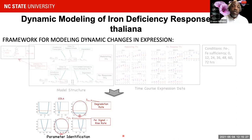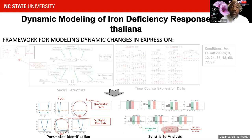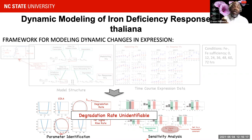Taking this model structure combined with the data, we aimed to estimate the system parameters. Using profile likelihood — an approach for assessing how identifiable a system is — we found that several parameters were literally unidentifiable, meaning we didn't have enough data to estimate them. These unidentifiable parameters were the degradation rate and the rise rate associated with the unknown iron signal. We then ran a sensitivity analysis, and found the system was not very sensitive to the rise rate but was particularly sensitive to the degradation rate. This meant we needed additional data to better determine the degradation rate.